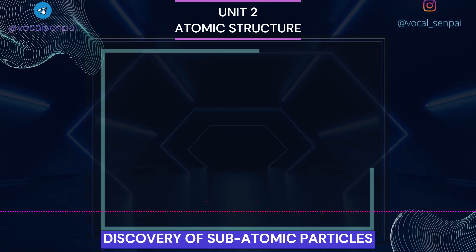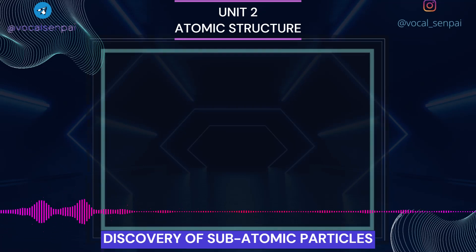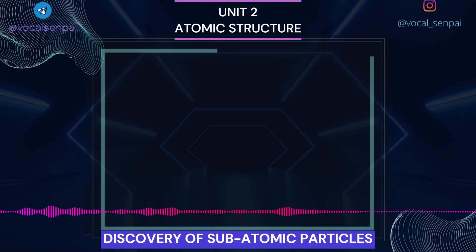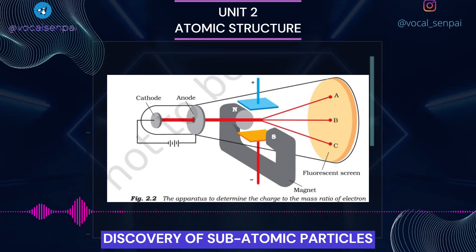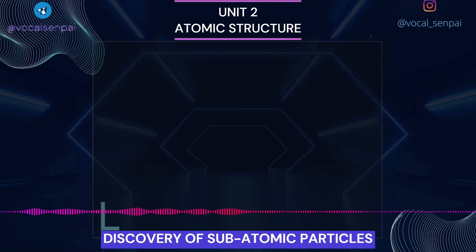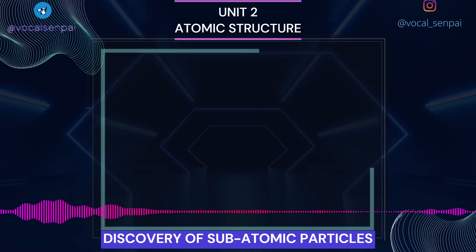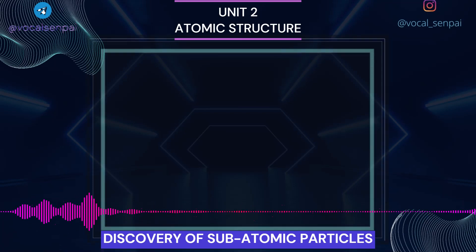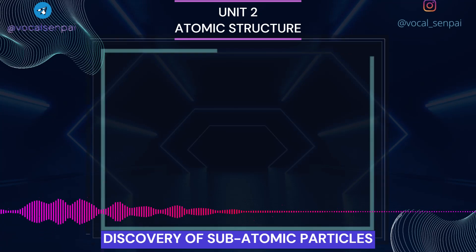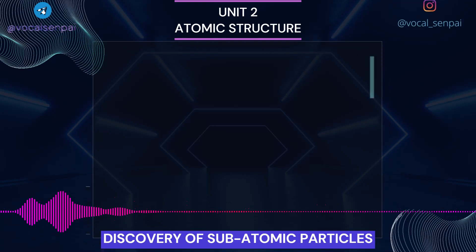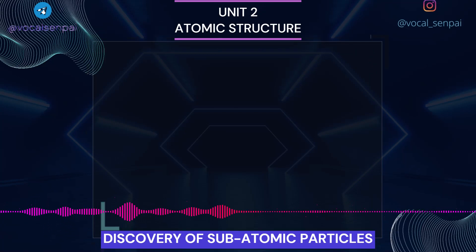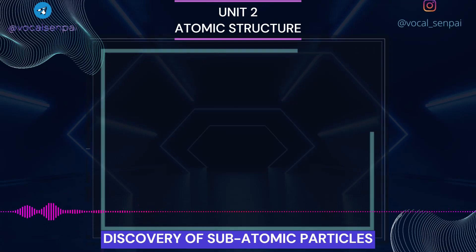Charge to Mass Ratio of Electron: In 1897, British physicist J. J. Thomson measured the ratio of electrical charge (e) to the mass of electron (m) by using a cathode ray tube and applying electrical and magnetic field perpendicular to each other as well as to the path of electrons. When only electric field is applied, the electrons deviate from their path and hit the cathode ray tube at point C. By carefully balancing the electrical and magnetic field strength, it is possible to bring back the electron to the path followed in the absence of electric or magnetic field, and they hit the screen at point B.